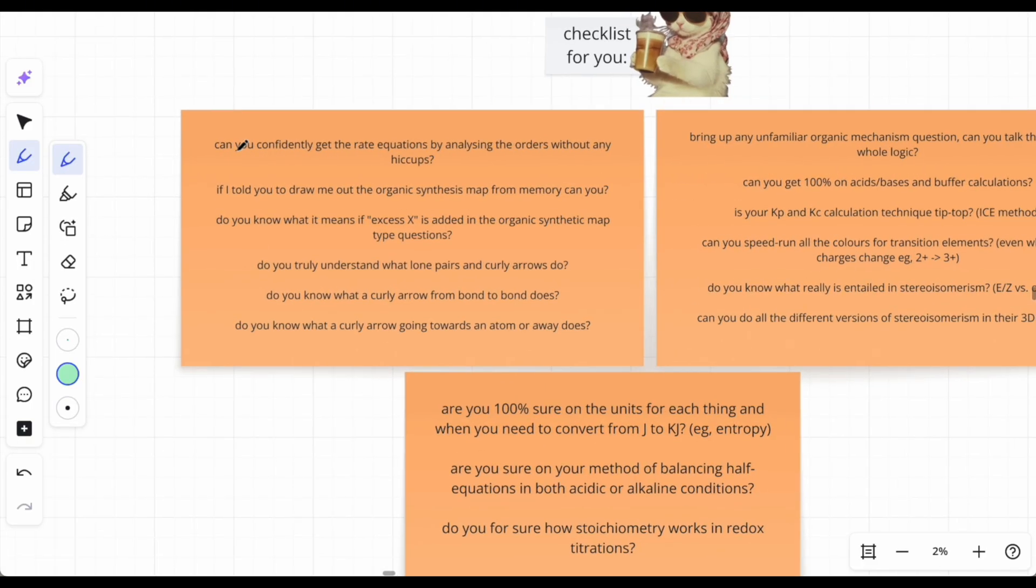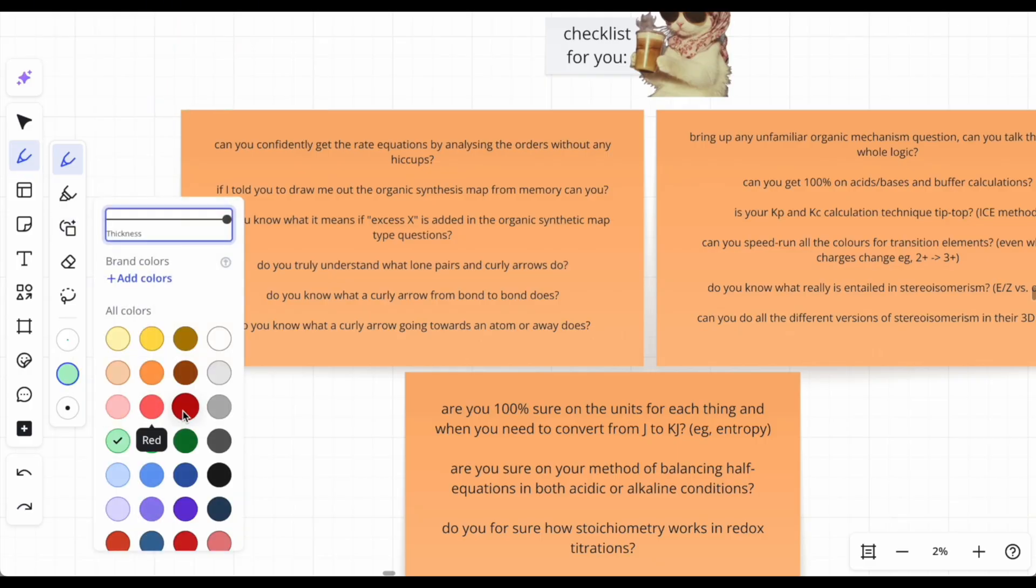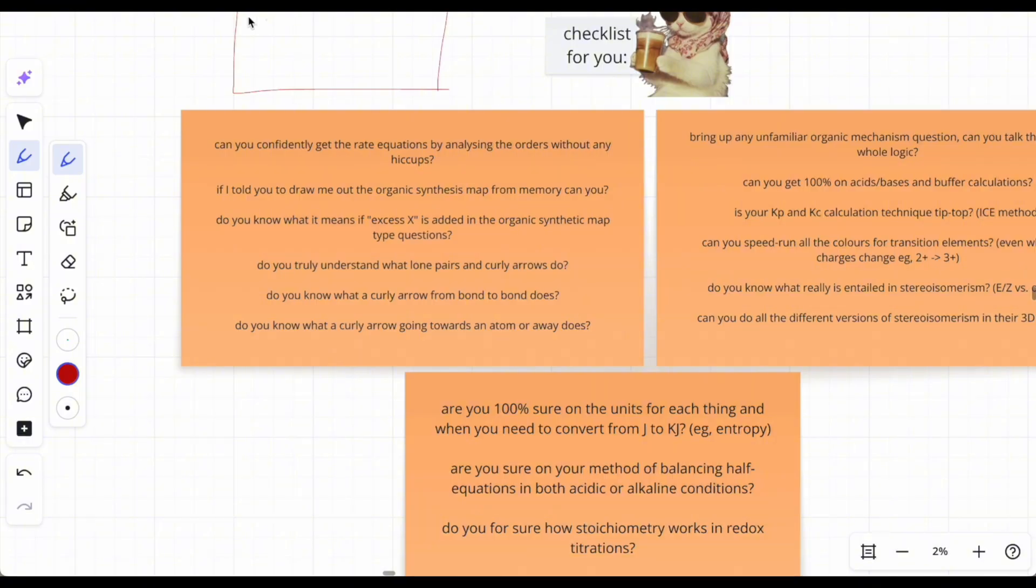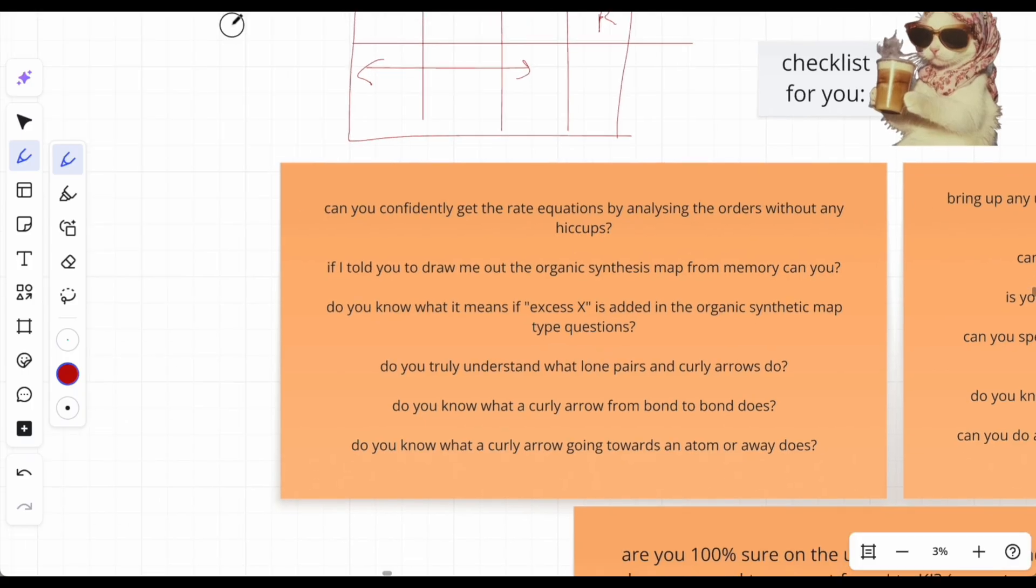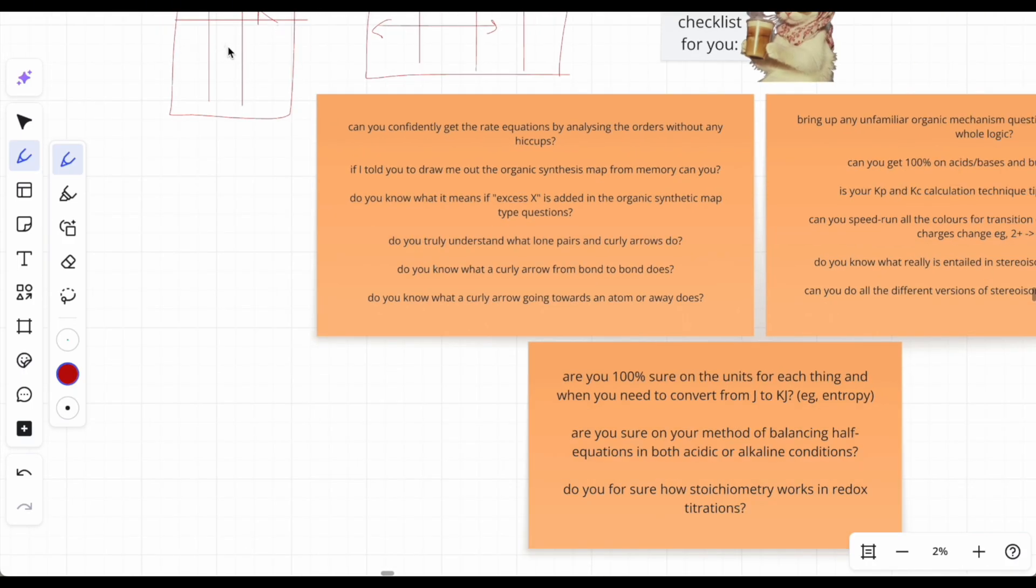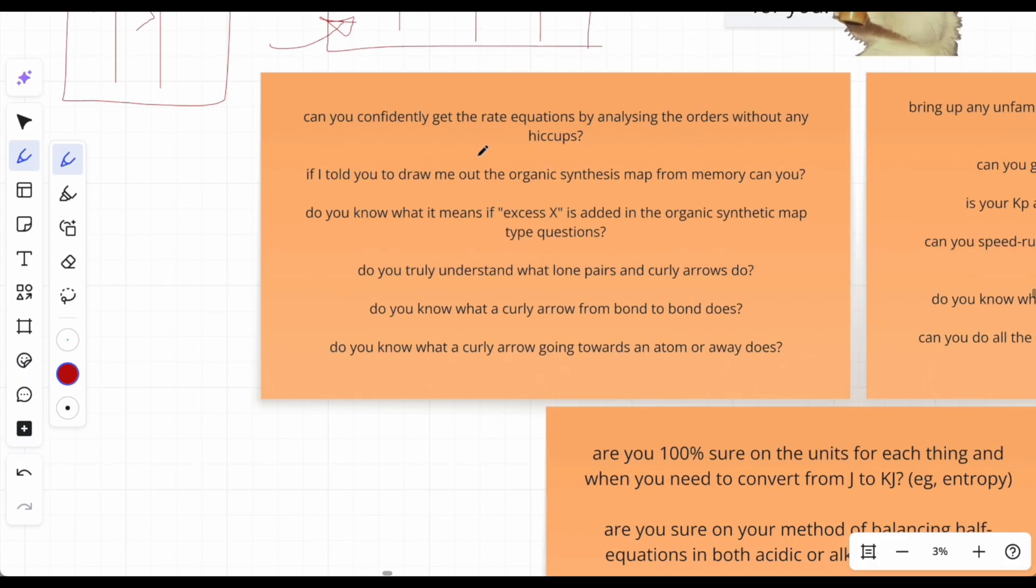Number one: can you confidently get the right equations by analyzing the orders without any hiccups? If you have a table with three columns, three ions, and you have to compare rates, there's a different technique compared to two columns. Some people get really stumped when this comes up, and it's typically the first written question in the paper. Make sure you can do that, then move on.